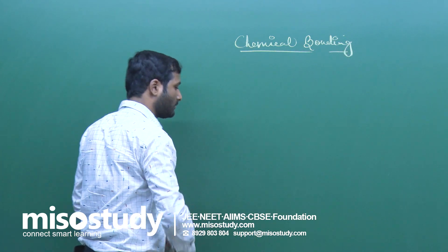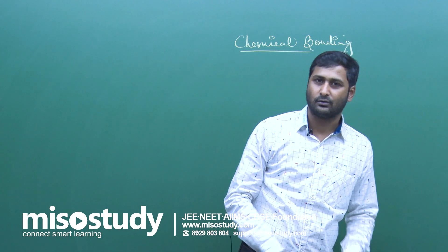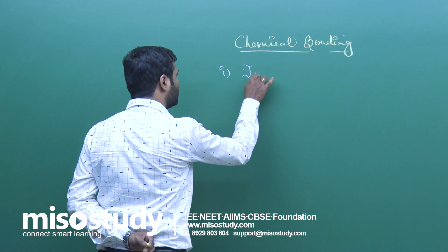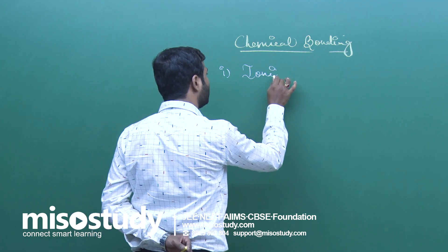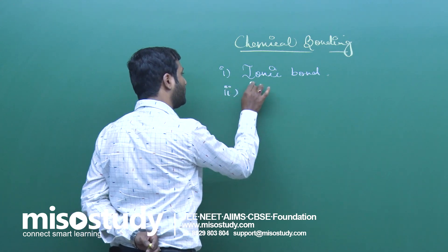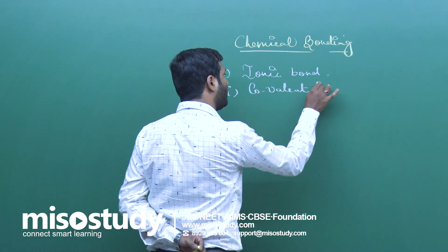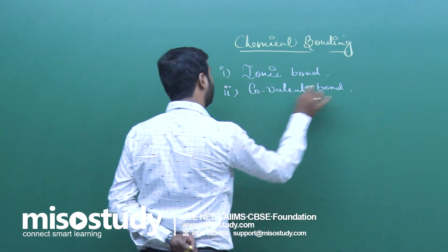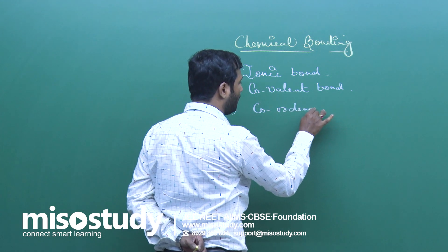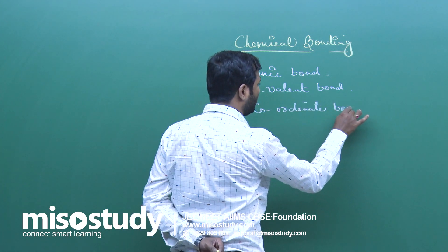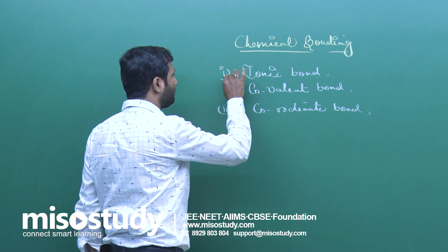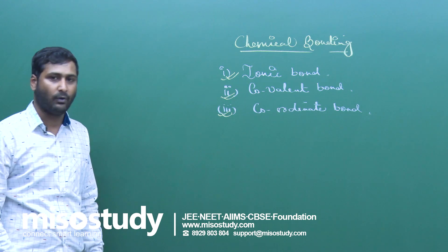Chemical bonding: we know the force which binds 2 atoms in a molecule, or 2 or more atoms in a molecule, is known as a chemical bond. Types of chemical bond: the first one is ionic bond, second one is covalent bond, and the third one is coordinate bond.